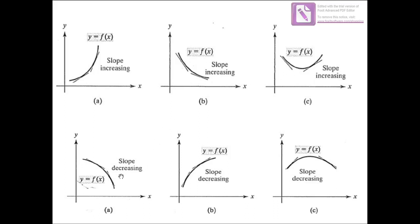Similarly, for the concave down case: if we have a negative slope here, and this one is also a negative slope but less sharp than that one, then the slope is decreasing, and we conclude that our function is concave down. For this one also, the slope is decreasing — this one is positive, this one is also positive, but this one is greater than that one — so we conclude that our slope is decreasing, meaning our function is concave down. For the last one, we have a positive slope, then zero, then a negative slope, so the slope is decreasing and our function is concave down.